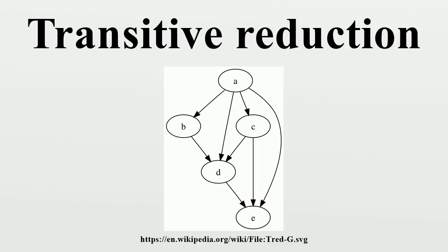In directed acyclic graphs, the transitive reduction of a finite directed graph G is a graph with the fewest possible edges that has the same reachability relation as the original graph. That is, if there is a path from a vertex X to a vertex Y in graph G, there must also be a path from X to Y in the transitive reduction of G, and vice versa.